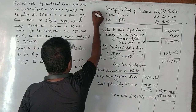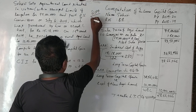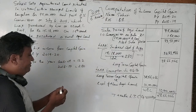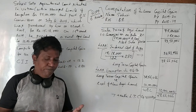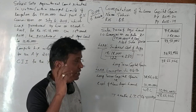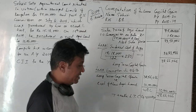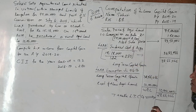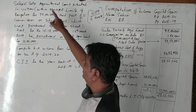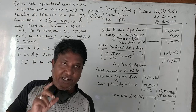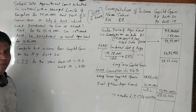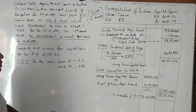This question is from 2019 for 6 marks. To summarize: Section 54B covers the sale of old agricultural land and purchase of new agricultural land. The key condition is that the land being sold must be in the urban area, while the new agricultural land purchased may be in a rural area or an urban area. Hope you understood this question.